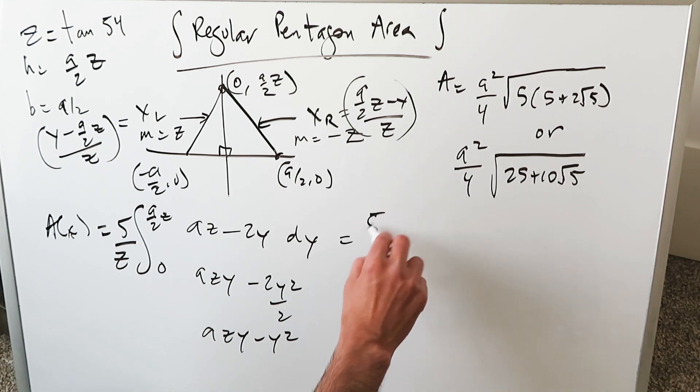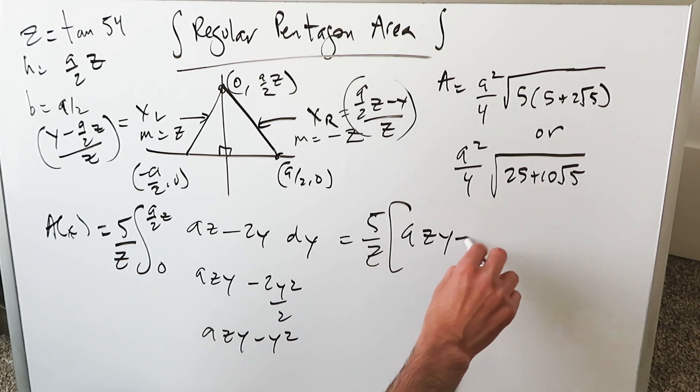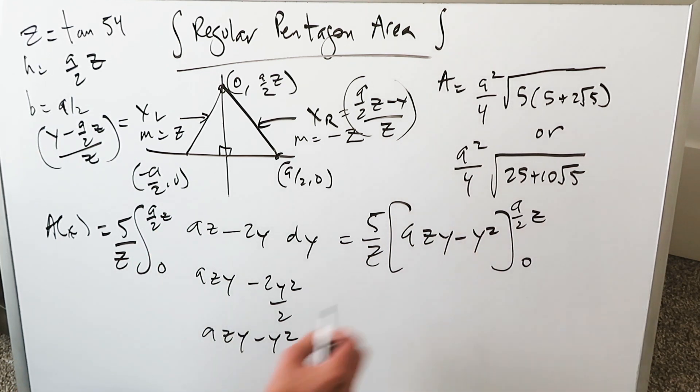Y is your variable. Here you'll have AZY. Here you'll have minus 2Y square over 2 which is really Y square. You're getting AZY minus Y square. That's what we have. 5 over Z.